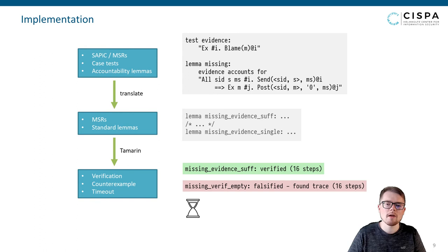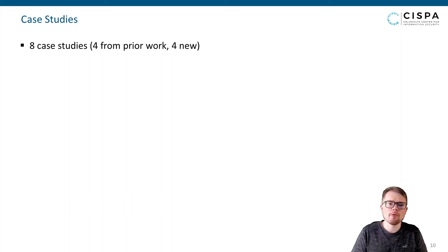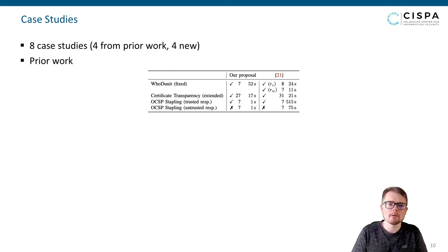We evaluated our approach on eight case studies: four from the first approach by Kühnemann and co-workers and four new ones in the domain of mix nets and electronic voting. We ported the case studies from prior work to the unbounded setting by extending the protocols accordingly. Comparing the results with those of Kühnemann and co-workers, we see that we obtain the same verification results. Accountability is provided in all cases except when the responder in OCSP stapling is untrusted. The verification time is significantly reduced except for whodunit, which is due to the increased number of possible interleavings in the unbounded setting.